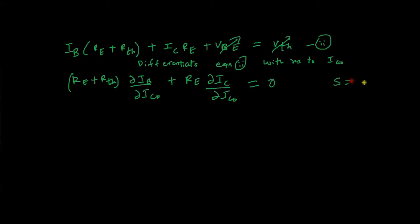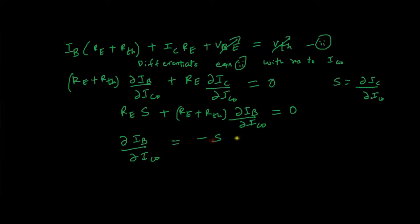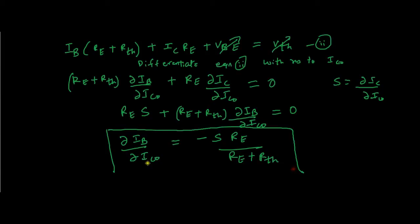We know that stability factor S is nothing but δIC/δICO. We substitute this value, so our equation becomes: (RE + RTH)·δIB/δICO + RE·S = 0. Rearranging, we get δIB/δICO = −S·RE/(RE + RTH). This is an important equation — we have the value of δIB/δICO expressed in terms of the resistances and the stability factor S.